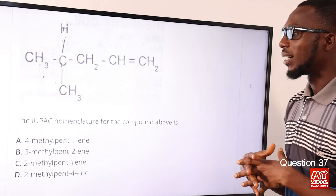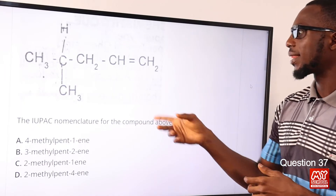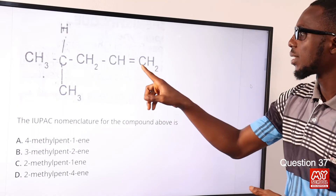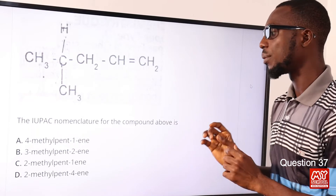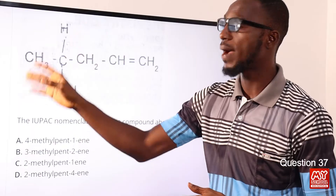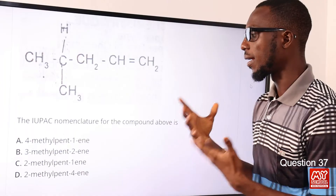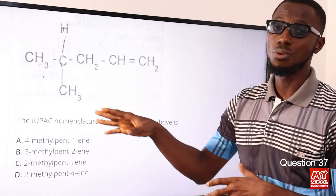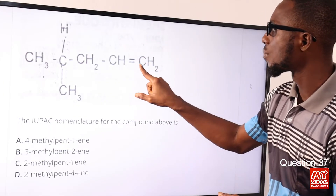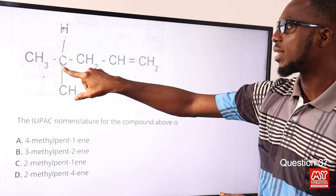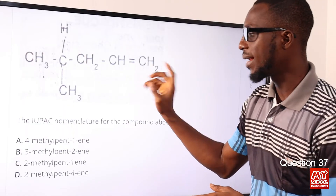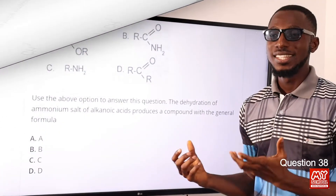Question 37: The IUPAC nomenclature for the compound above is what? Following the naming protocols for hydrocarbons: there is a double bond, which tells us this is an alkene family. The double bond is positioned on the first carbon. From the longest chain we count one, two, three, four, five carbons — so this is pent-1-ene. The alkyl group is attached to the fourth carbon atom. The compound is named 4-methylpent-1-ene. Option A is the correct option.